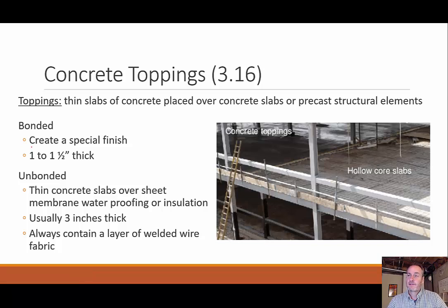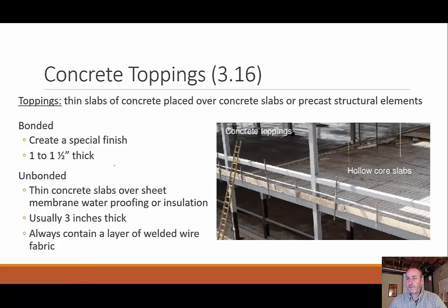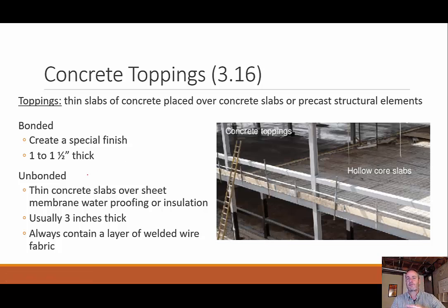We can also talk about concrete toppings — concrete placed on top of other concrete, over slabs or precast structural elements. It could be bonded or unbonded. A bonded topping might be used to create a particular finish, like colored concrete, with just a one to one-and-a-half inch special finish on top. An unbonded concrete topping needs its own structural strength — it's thicker, around three inches, and requires rebar or welded wire fabric to provide tensile strength.